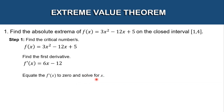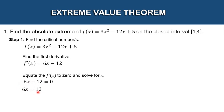We solve for x. We have 6x − 12 = 0. To find the value of x, let's isolate x — move negative 12 to the other side: 6x = 12. Dividing both sides by 6, we get x = 2. And this is our critical number.